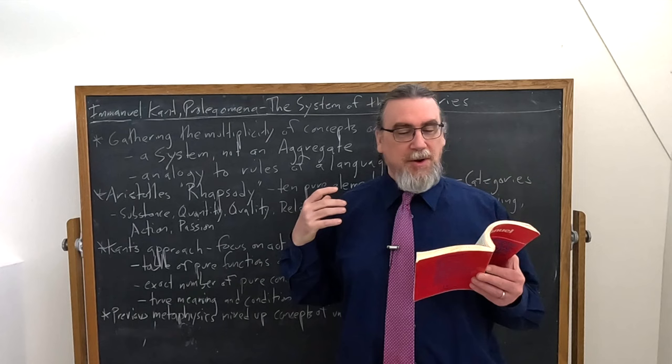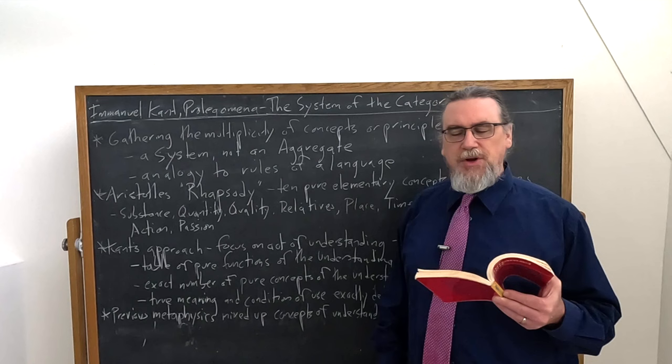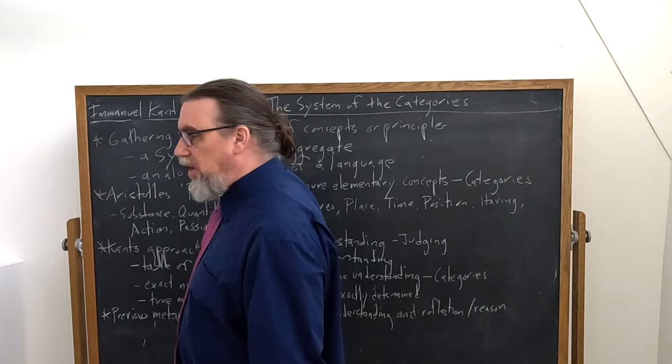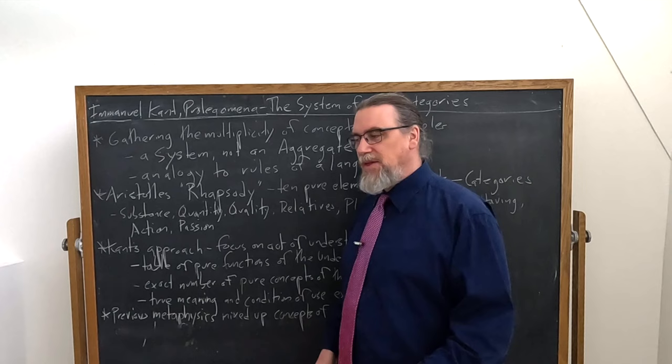So he goes on and says: what's the similarity? Even though we're not able to give a reason why each language has just this and no other formal constitution — and still why exactly so many, neither more nor less, of such formal determinations in general can be found in it — well, it's the same with the categories of the understanding. There's the amount that you've got, and we can't actually provide an ultimate explanation for why exactly these, but we can say here they are.